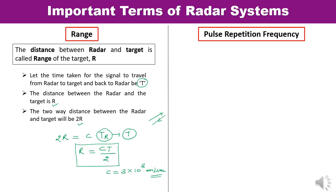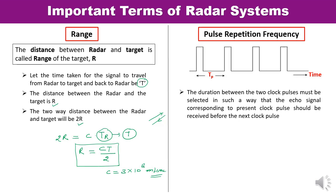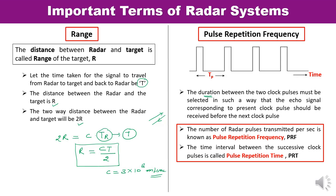The second important term is the pulse repetition frequency. The duration between two clock pulses must be selected carefully — the echo signal corresponding to the present clock pulse must be received before the next clock pulse is transmitted. The number of radar pulses transmitted per second is known as the pulse repetition frequency (PRF), and the time interval between successive clock pulses is known as the pulse repetition time (PRT).